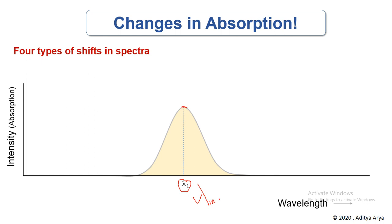Now one question that arises here: does this graph always remain the same for a molecule? Does lambda max always remain the same, or does the intensity of light absorbed by the molecule always remain the same? Obviously not — there are plenty of conditions in which this typical spectra of a molecule might change. So let us talk about those conditions.